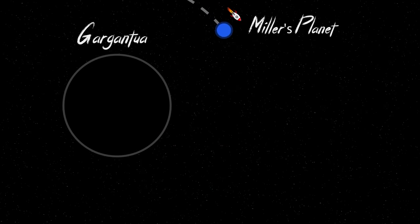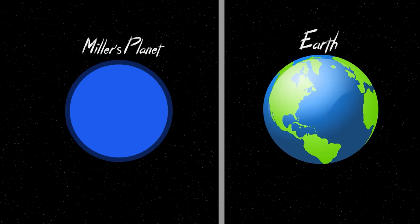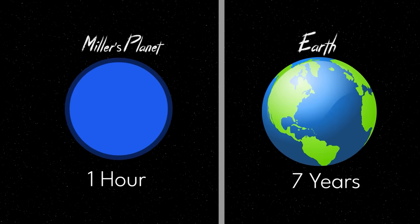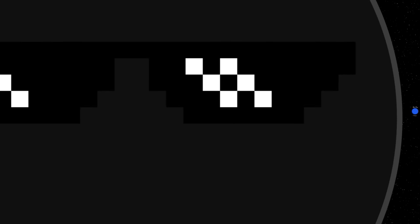The logic behind this idea is that the crew want to spend as little time as possible within proximity of Miller's planet. Keep in mind that one hour on Miller's planet represents seven years on Earth since it's so close to Gargantua's massive gravitational pull.